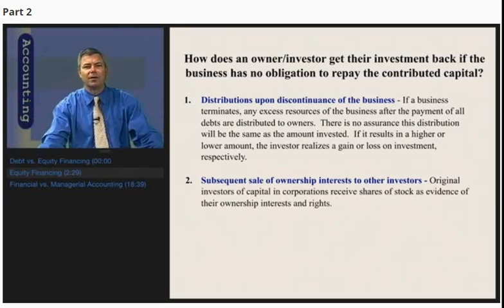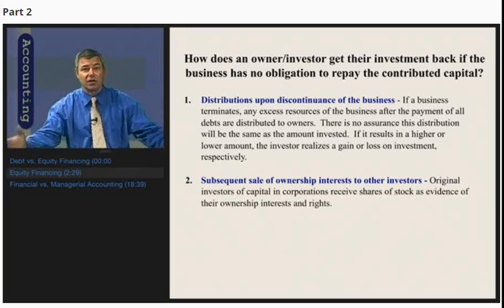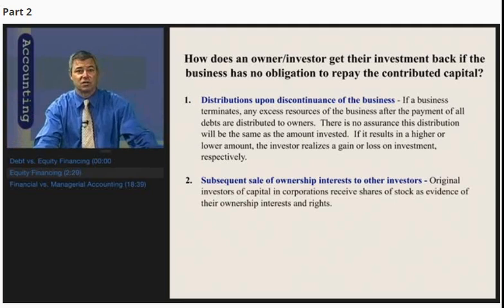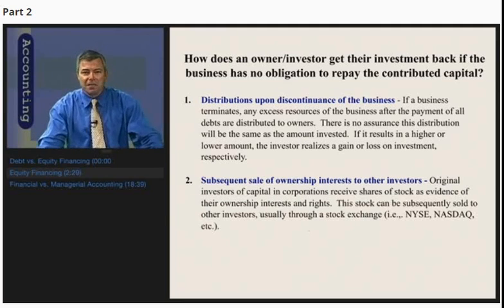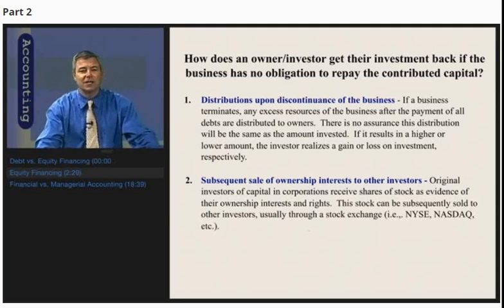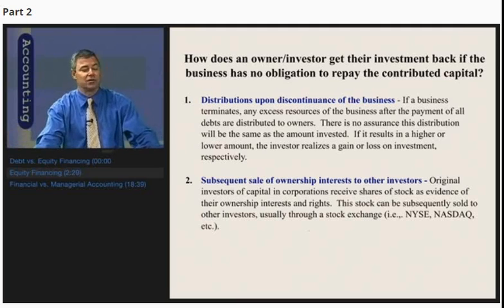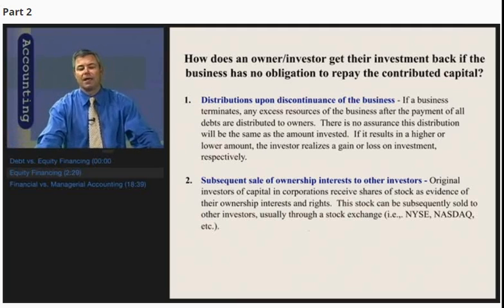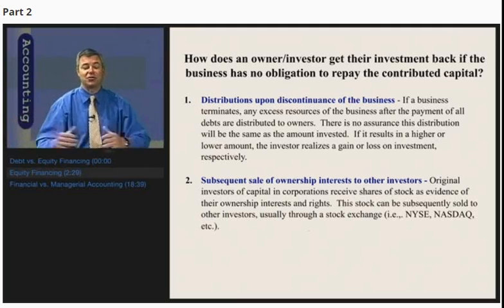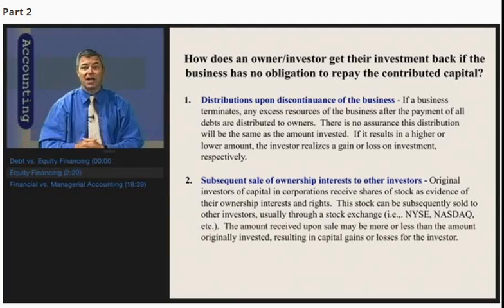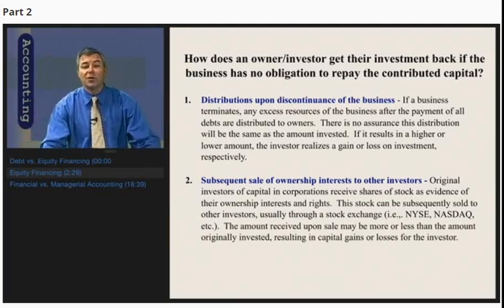Original investors in corporations receive shares of stock as evidence of their ownership interest and rights. This stock can subsequently be sold to other investors, usually through a stock exchange like the New York Stock Exchange, NASDAQ, or the American Stock Exchange. If you own a share of IBM stock and sell it to another investor through the NYSE, the amount you receive may be more or less than what you originally paid, resulting in a capital gain or loss to you.